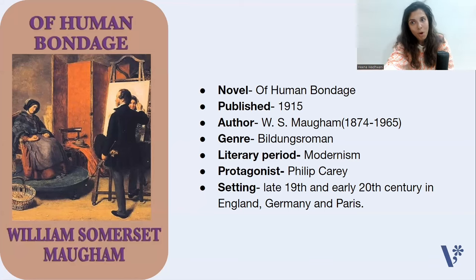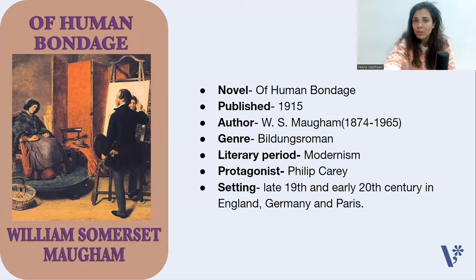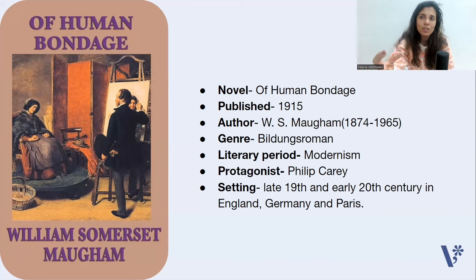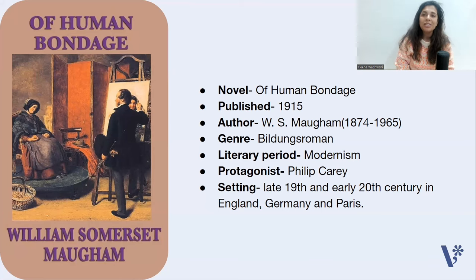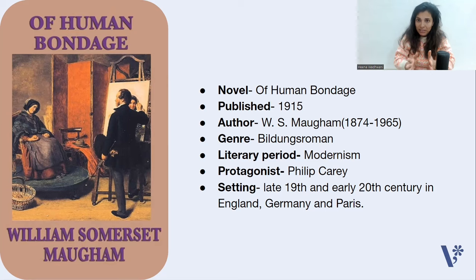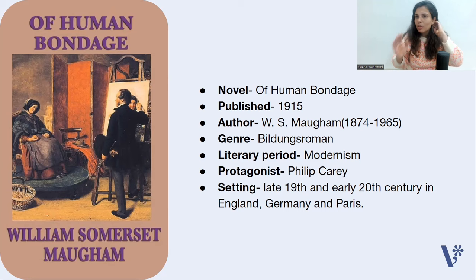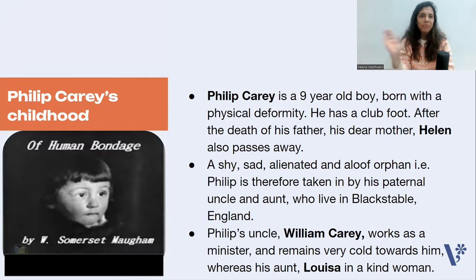William Somerset Maugham was a British writer who lived from 1874 to 1965. He published Of Human Bondage in the year 1915. It is a Bildungsroman, which means it talks about the growing years of the protagonist. The protagonist is a boy named Philip Carey. The literary period is Modernism, and the setting spans late 19th and early 20th century London, England, then Heidelberg Germany, then Paris, France.